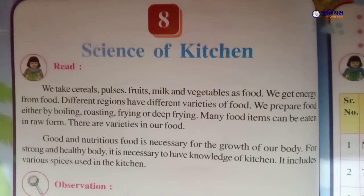We take cereals, pulses, fruits, milk and vegetables as food. So children, we eat all these things like cereals, pulses, fruits, milk and vegetables as food. We get energy from food — the energy and strength we get comes from food. Different regions have different varieties of food.